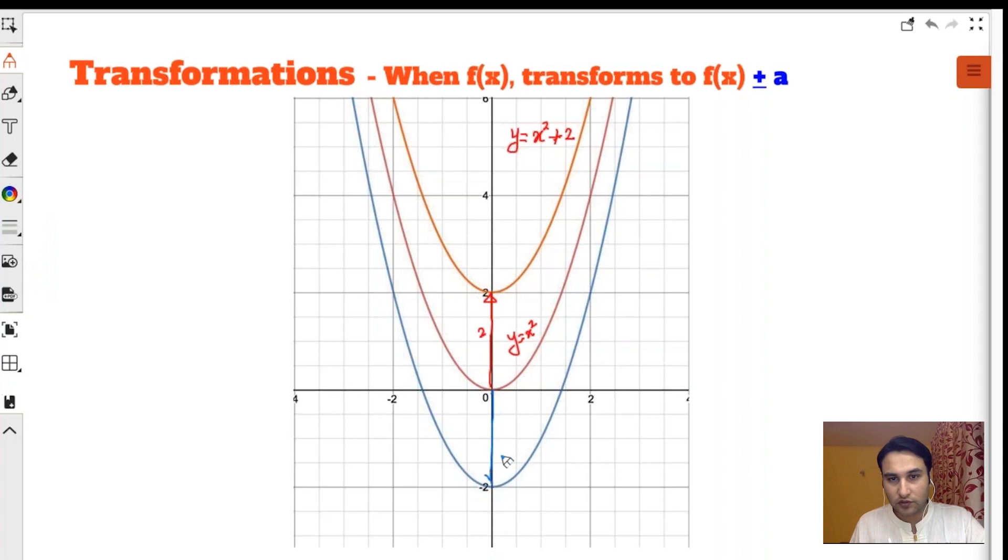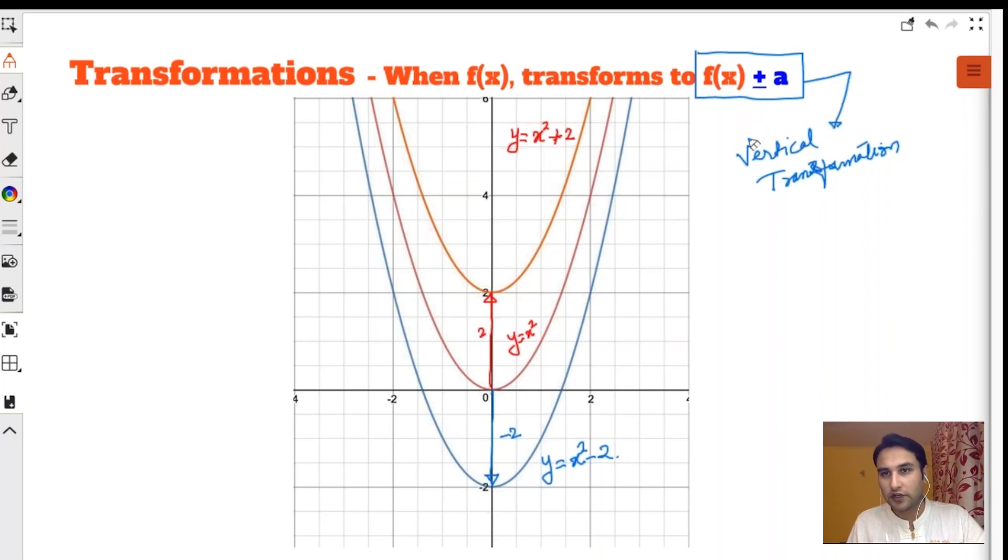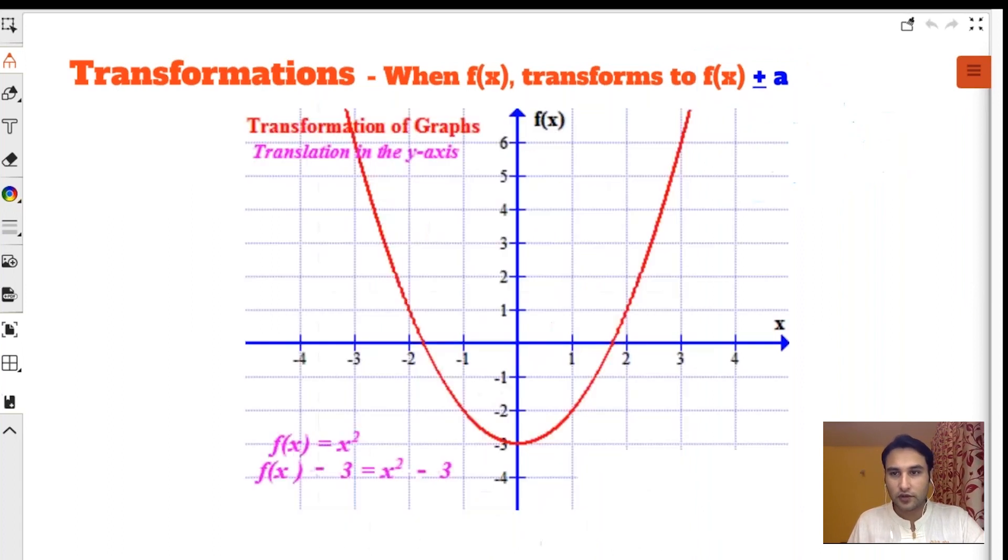And which is this blue one? It is x² - 2. It has gone below by 2, so this is y = x² - 2. What do we call it? Vertical transformation. Very simple case, nothing special here. We will learn its application very soon. Whenever you add something to a function, it vertically transforms it—moves along the y-axis up and down.